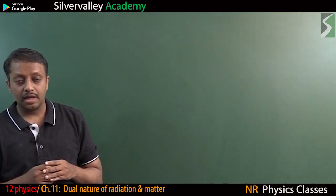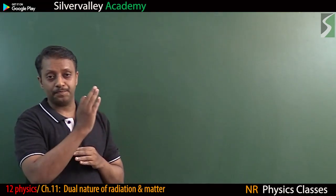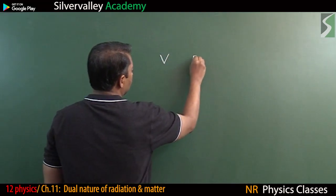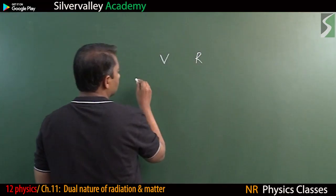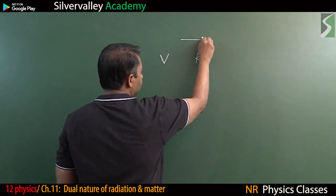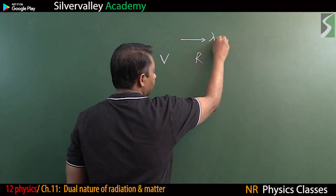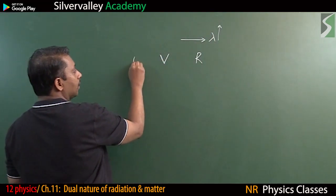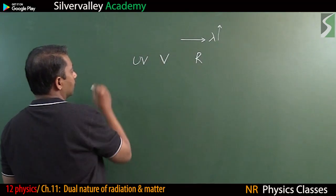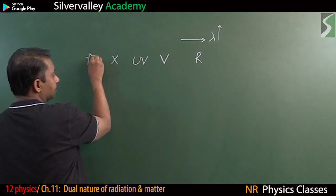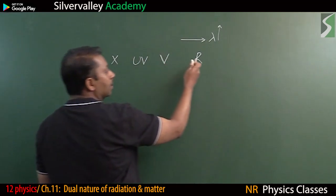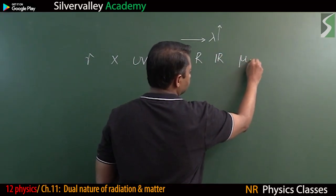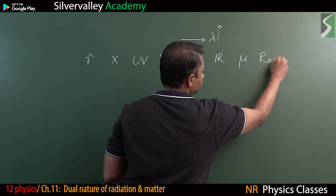Electromagnetic radiation and the electromagnetic spectrum: the visible spectrum runs from violet to red, with wavelength increasing toward red. Shorter than violet is ultraviolet, then X-rays, gamma rays, and cosmic rays. Beyond red, we have infrared (IR), microwaves, and radio waves.